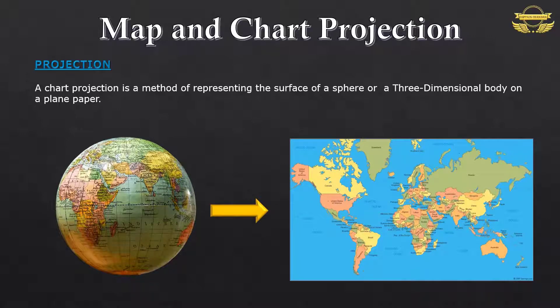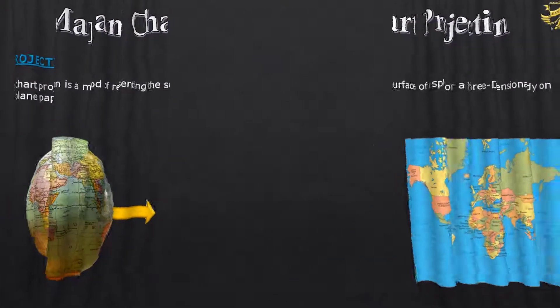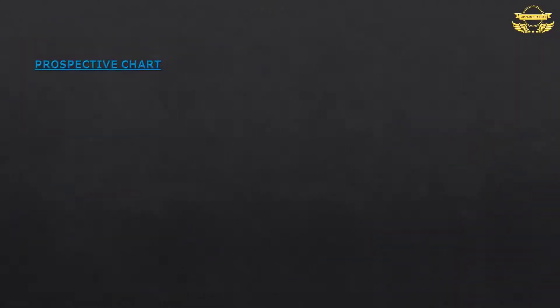In this chapter, we will discuss basic knowledge about projection. Prospective Chart: When the features of global surface are projected directly on a plane paper, it is called prospective projection or geometrical projection.